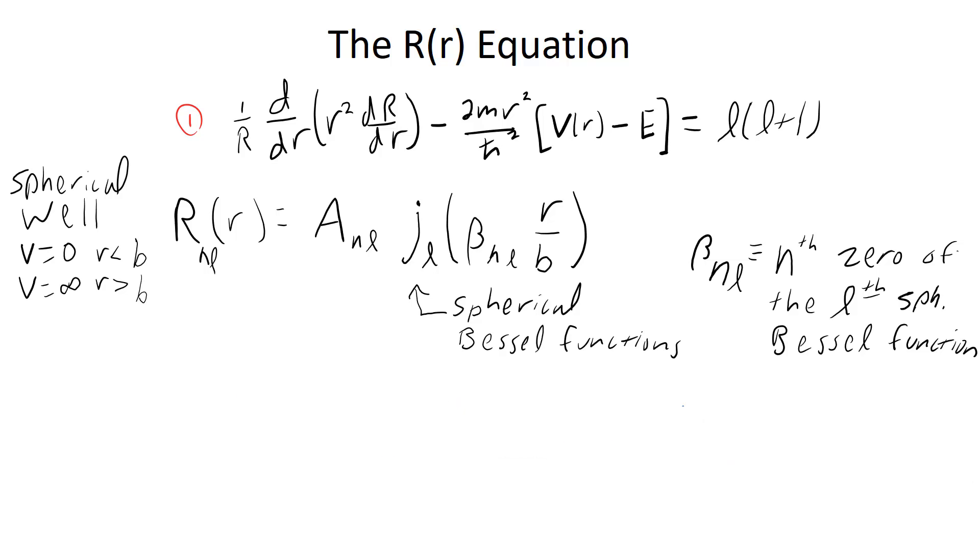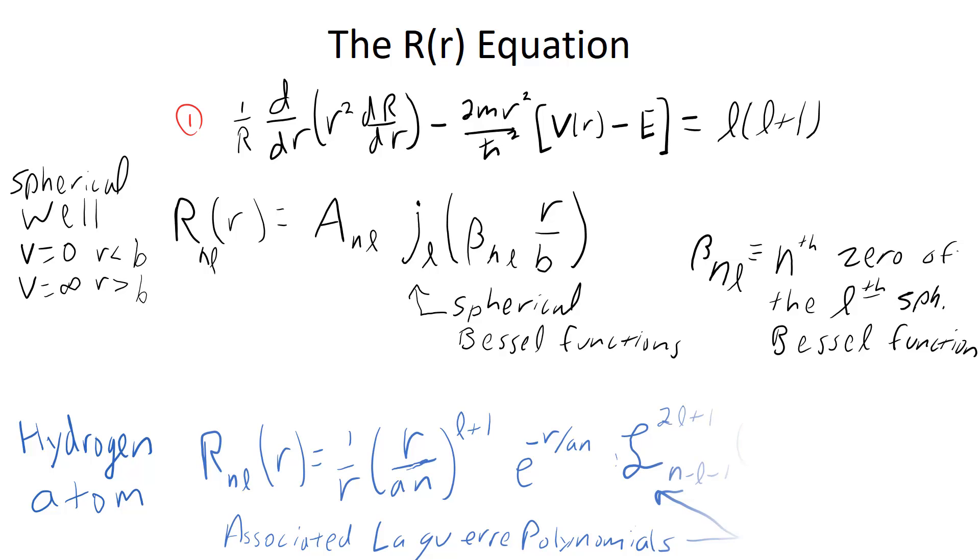Section 4.2 of Griffiths works out the hydrogen atom, where we have a Coulomb's Law type of potential energy, just 1/4πε₀ e²/r. And with that function as V of r, we end up getting solutions that are associated Laguerre polynomials. And at this stage, that's put in front of us as a postulated solution without derivation.